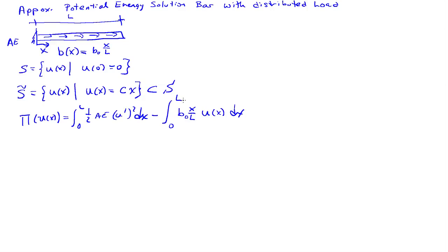And for U of x, we're going to use this simple form here. So we'll have 0 to L, one-half AE times C squared dx, minus integral 0 to L, B0 x over L, C times x dx. And so now the potential energy has become a function of C.